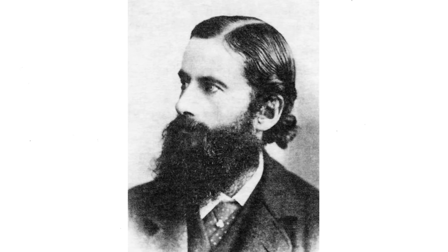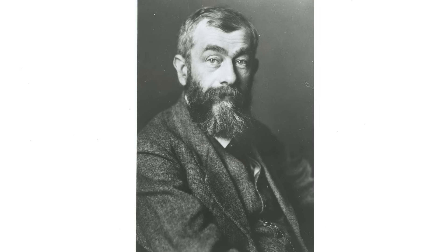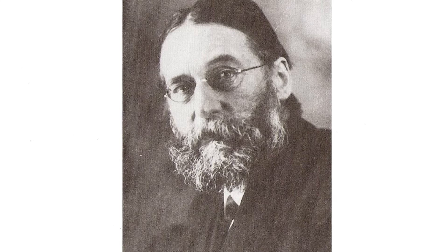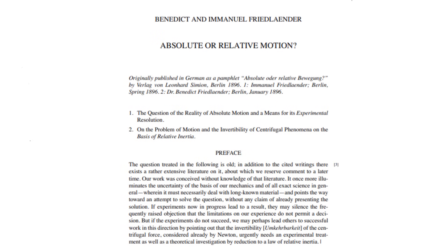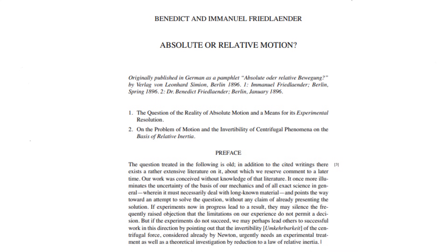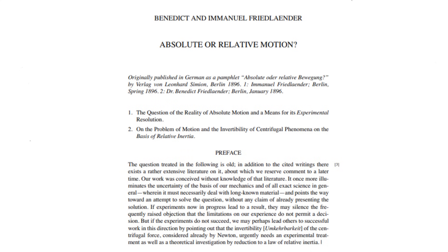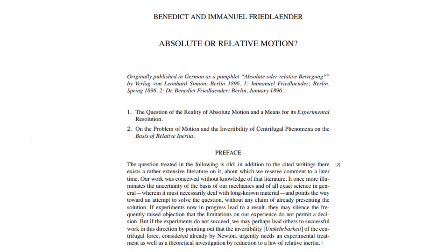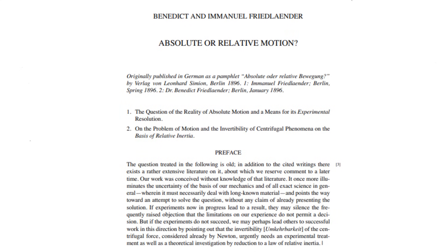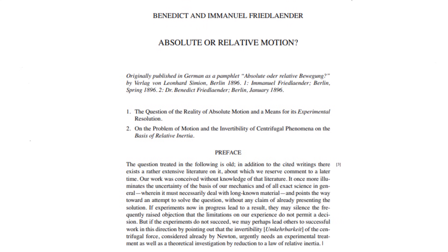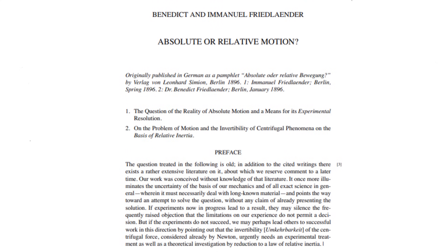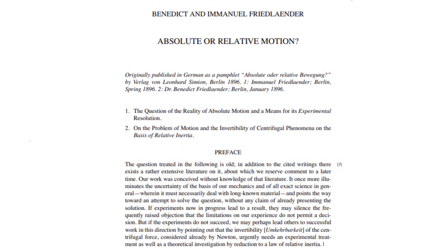The first ones to relate Mach's work to gravity were Benedikt and Immanuel Friedländer, August Vöppel and Wenzel Hofmann. In 1896, the Friedländer brothers published Absolute or Relative Motion, stating that the correct form of the law of inertia will only be found when relative inertia and gravitation, both effects of masses on each other, have been derived on the basis of a unified law.